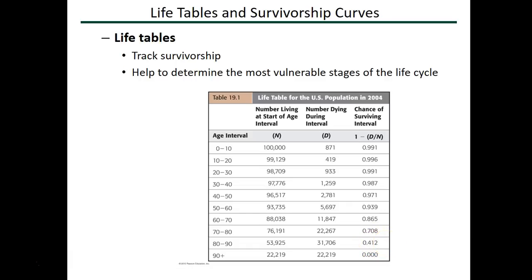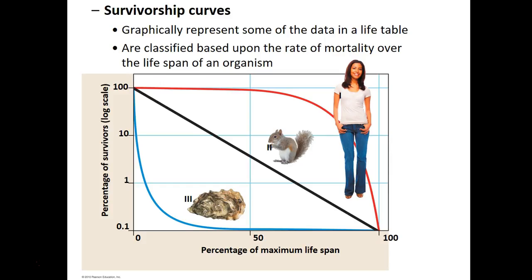To compare different organisms and their survivorship, you can plot survivorship on a curve. It turns out there are three main survivorship curve types. The first is a Type 1 curve, which follows that of a human being — for most of your life you have a very good chance of surviving to the next age category, until you get quite old, at which point your rate of dying increases dramatically.